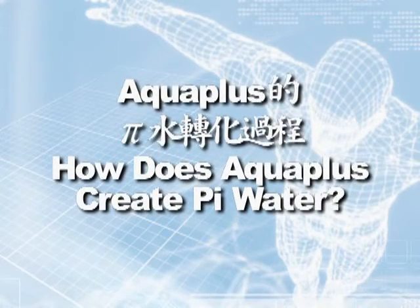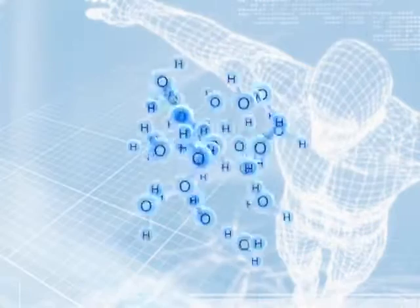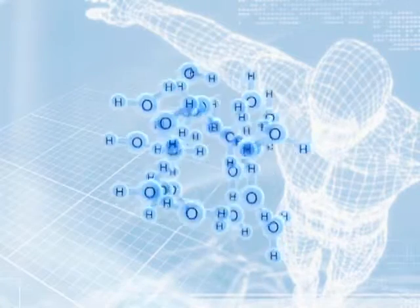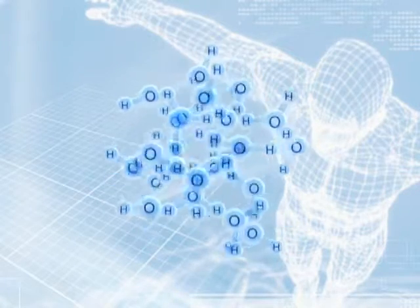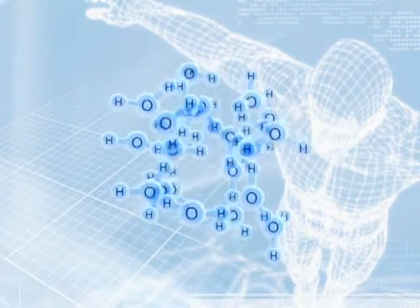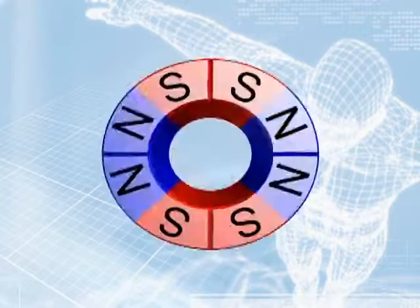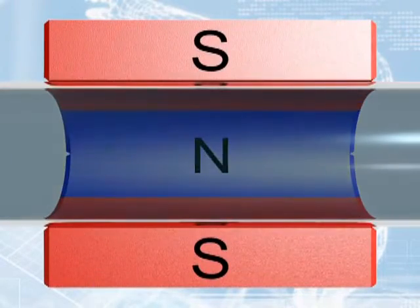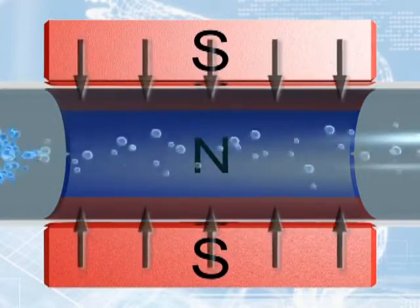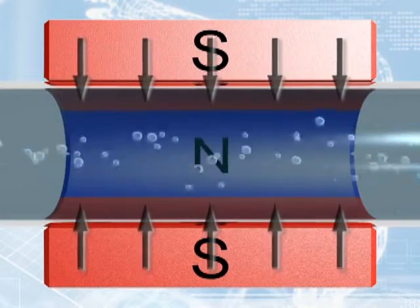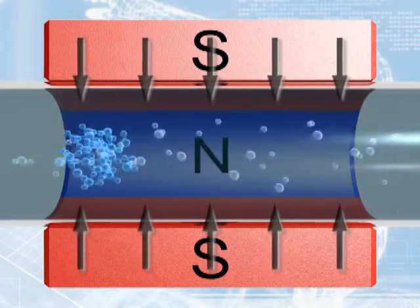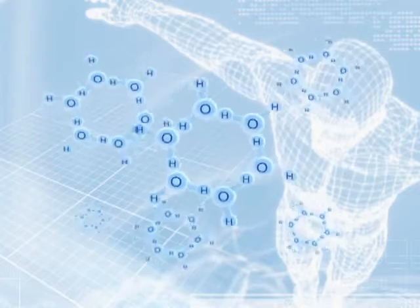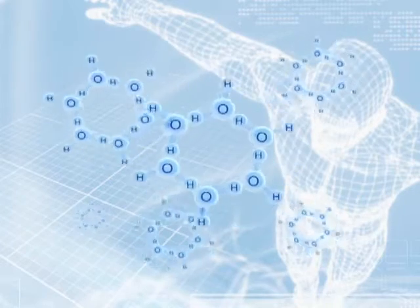AQUPLUS applies two processes to change regular water into pie water. The first process is called magnetic enhancement. During this process, water flows through a pipe surrounded by carefully arranged magnetic fields. The large water structure is converted into a small structure with six molecules.